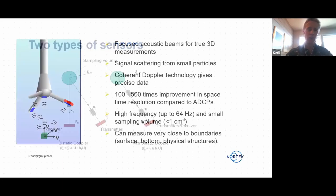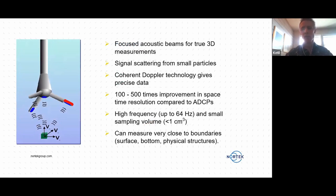And the vector, which is the instrument I'm going to talk about first, is an example of a bistatic sensor, where it has a transmitter in the middle, it has receivers distributed around that transmitter, and they all focus on a small sampling volume that lies quite close to the probe itself. So it uses focused acoustic beams to measure the 3D velocity in that small sampling volume.